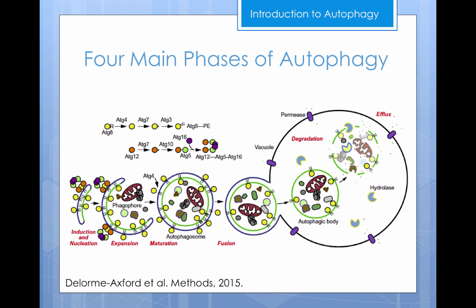There are four main phases of the autophagy pathway. The first is induction and nucleation, which forms an isolation membrane. The second is expansion of the isolation membrane, termed the phagophore, and this structure envelopes the cargo that is targeted.